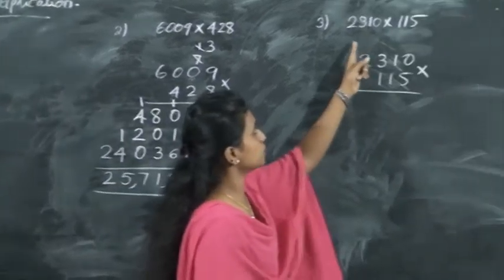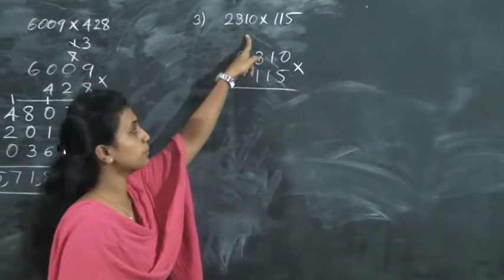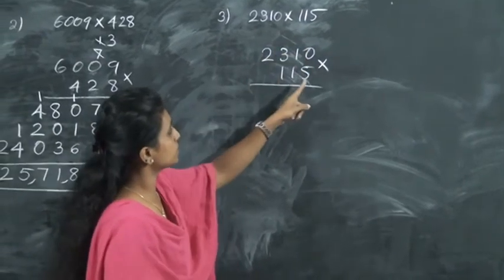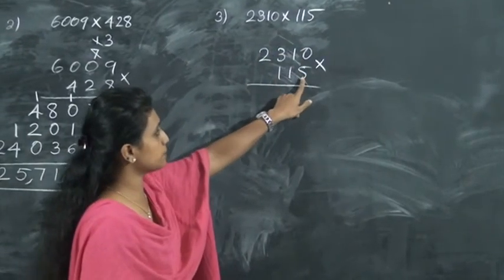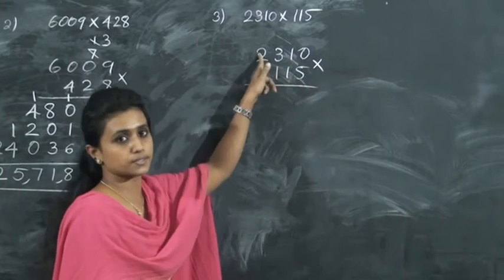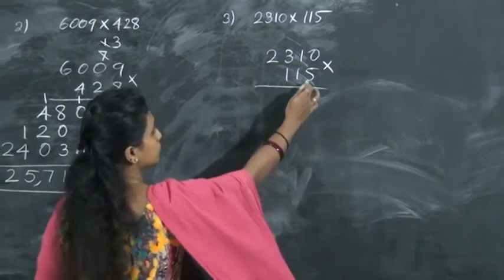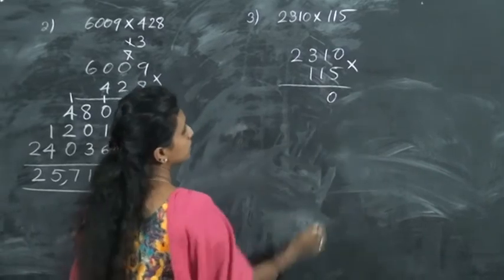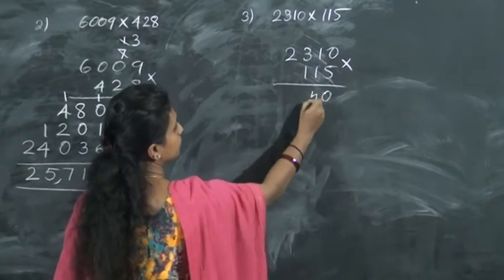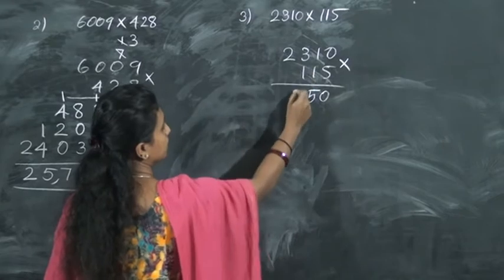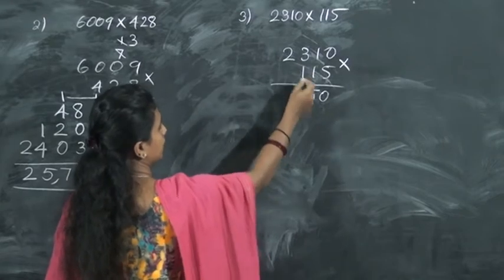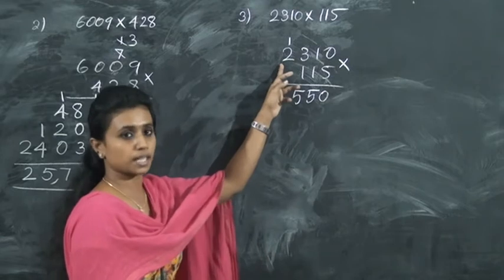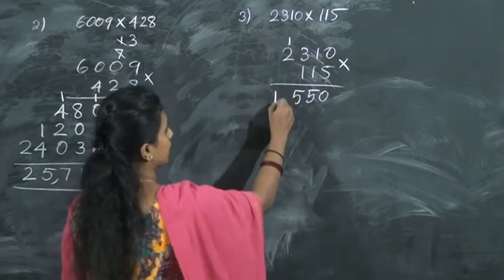Now let's do the third one. We want to multiply 2310 by 115. Let's start. We want to multiply 5 with all these numbers. 5 zeros are 0. Then 5 ones are 5. 5 threes are 15 — write 5 and 1 is carried over. Then 5 twos are 10 plus 1 is 11.